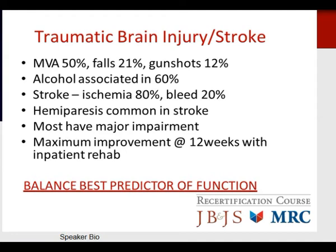Regarding traumatic brain injury and stroke: 50% of TBI occurs from motor vehicle accidents, 21% from falls, 12% from gunshots, with alcohol associated in 60% of cases. Stroke is ischemic in nature or hemorrhagic (20%). Hemiparesis is common in stroke, and most individuals have major impairment. Maximum improvement is expected at 12 weeks with inpatient rehab. An important predictor of function is balance.